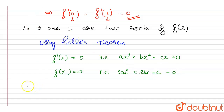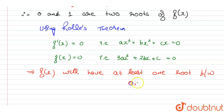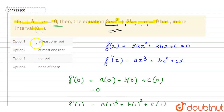This implies that f(x) will have at least one root between the intervals 0 to 1, because the antiderivative value comes out to be 0 at both endpoints. Therefore f(x) has at least one root between 0 and 1. Checking the options, option 4 — at least one root — is the correct answer.